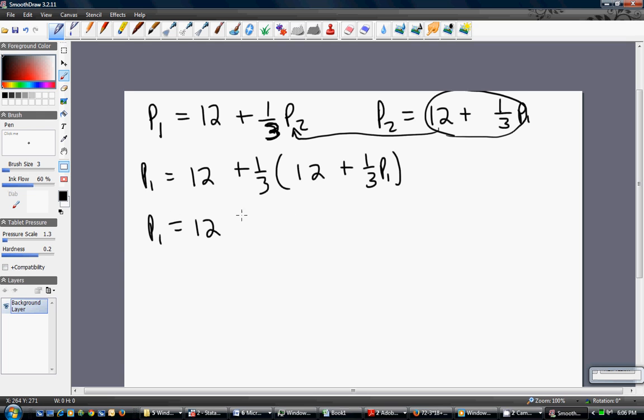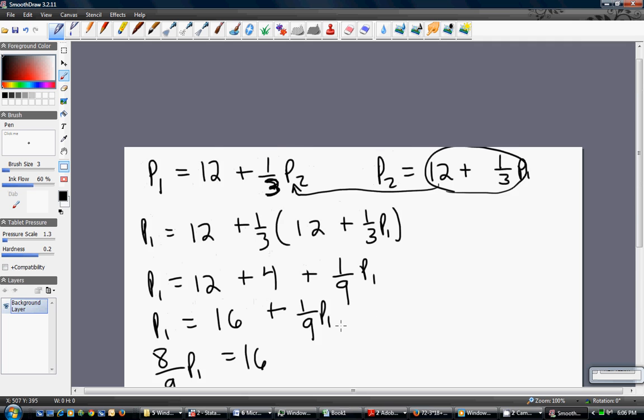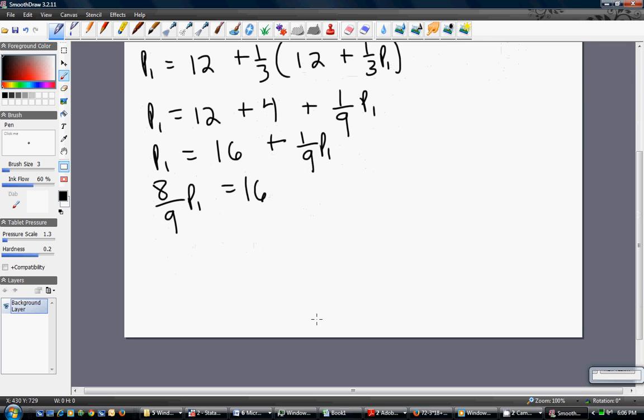Simplifying, solving for P one. Firm one's price is $18.